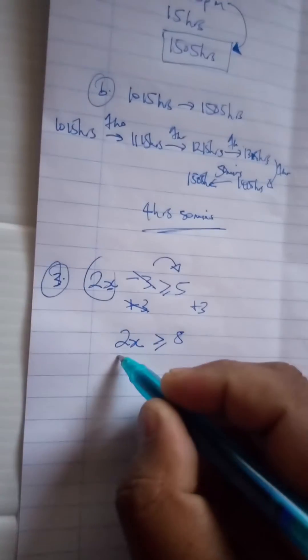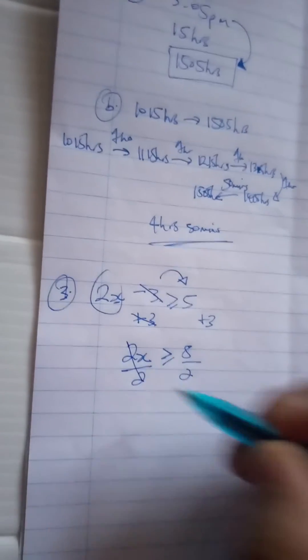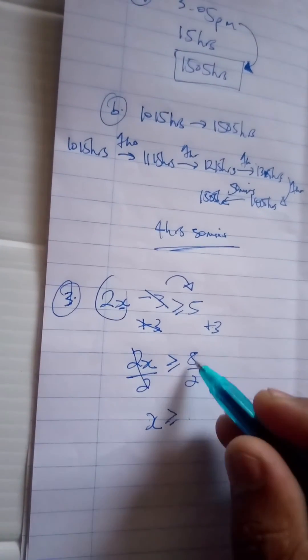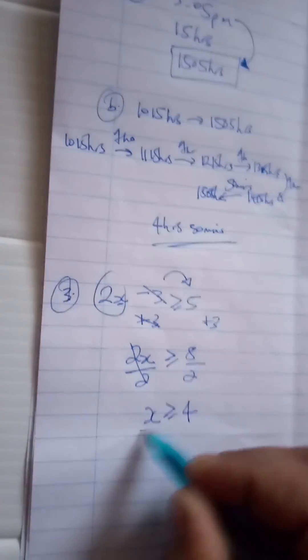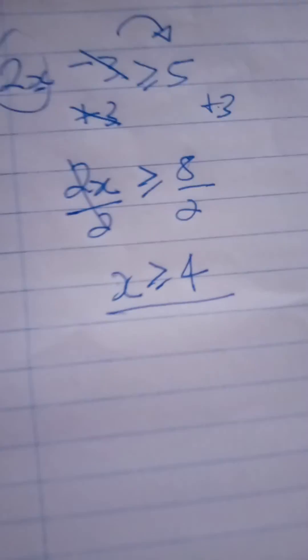We're then going to divide by 2 on both sides. These two cancel each other. X is then greater or equal to 8 divided by 2, which is 4. We have solved the inequality.